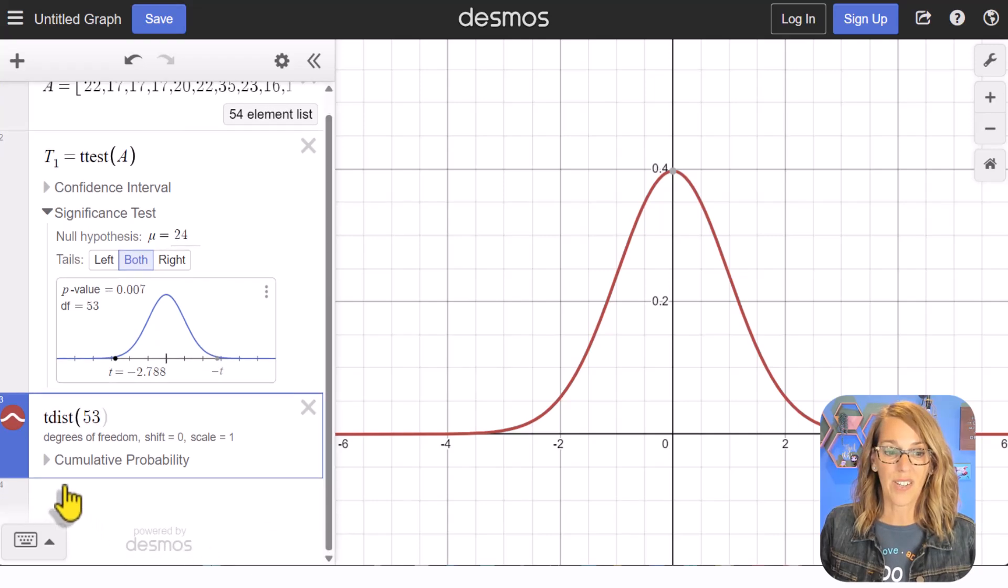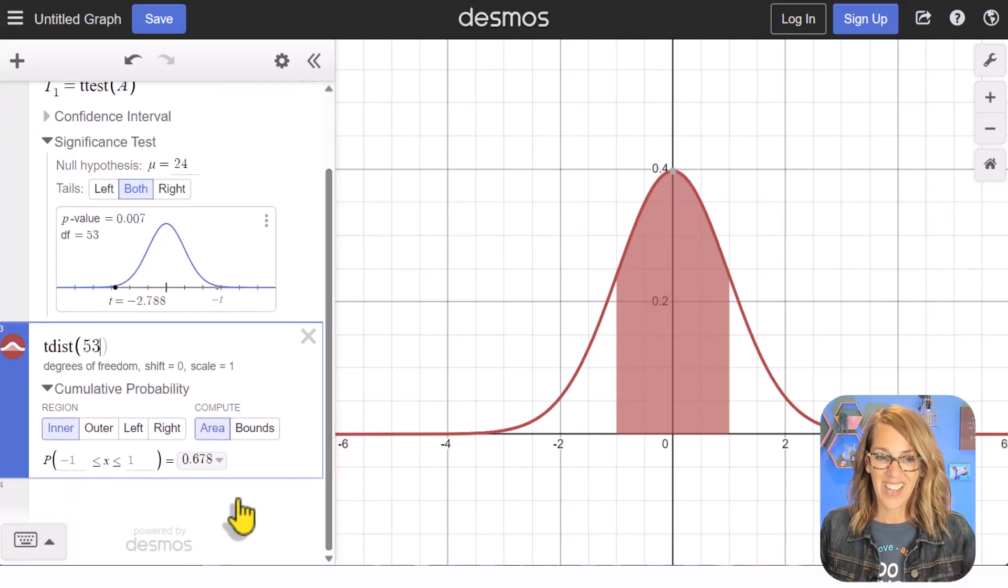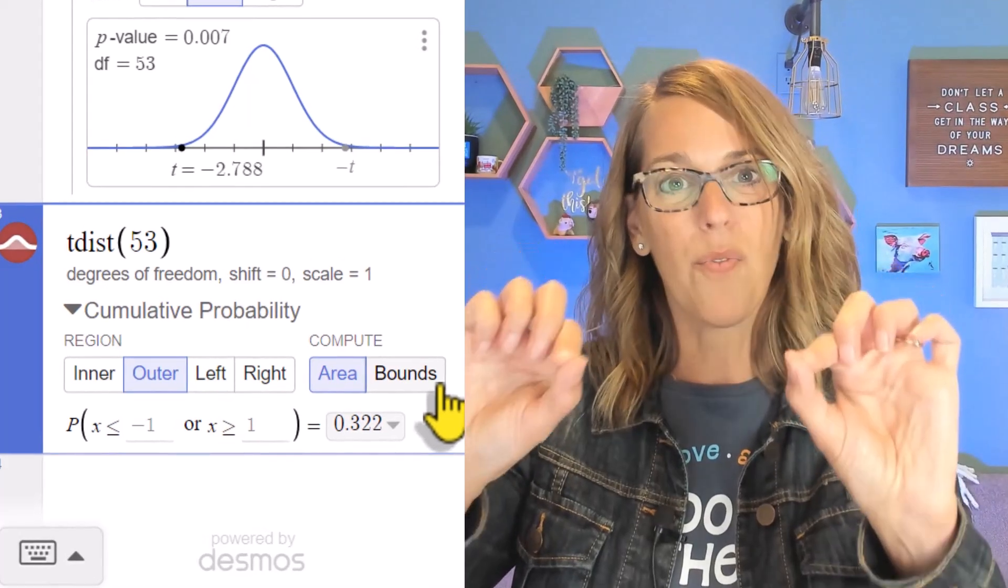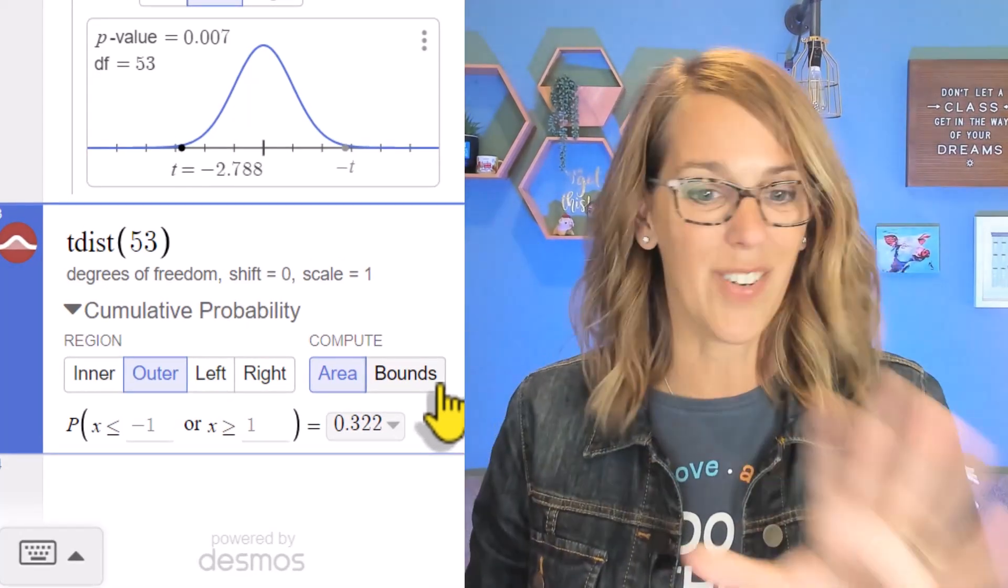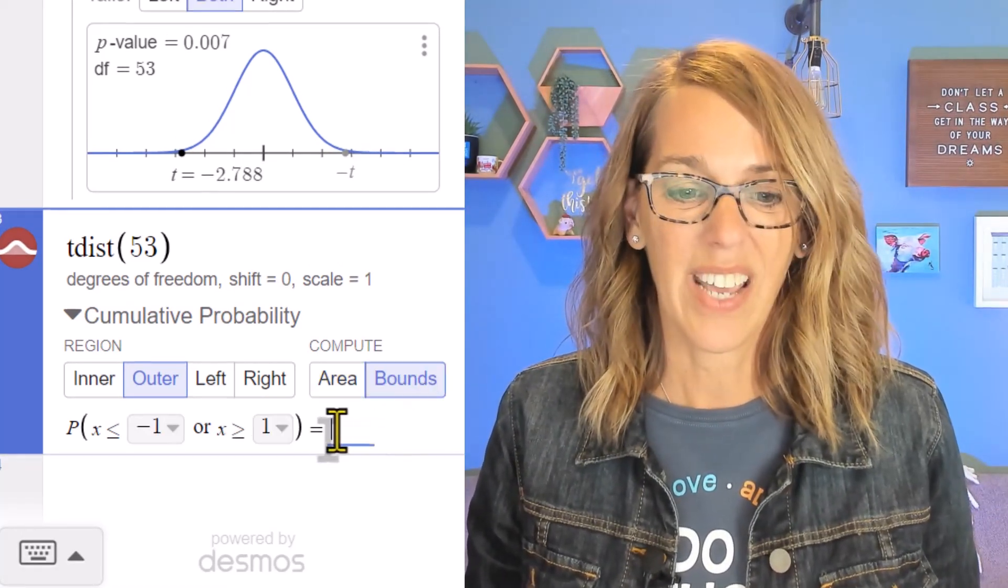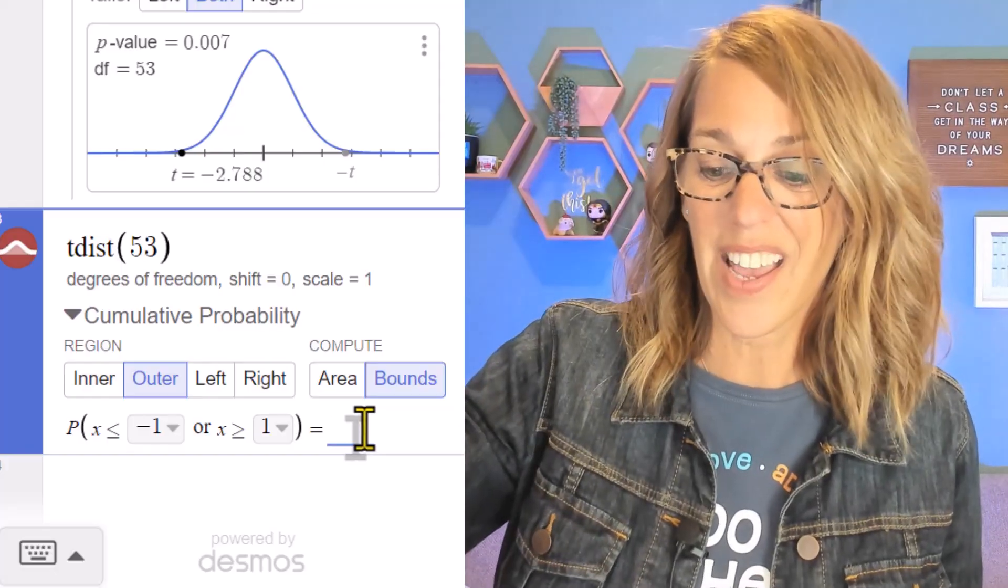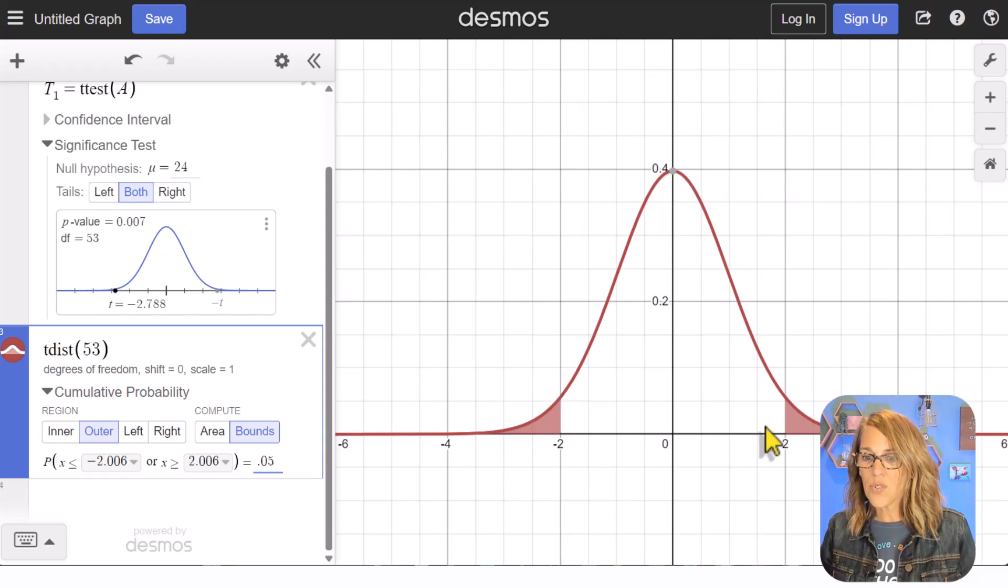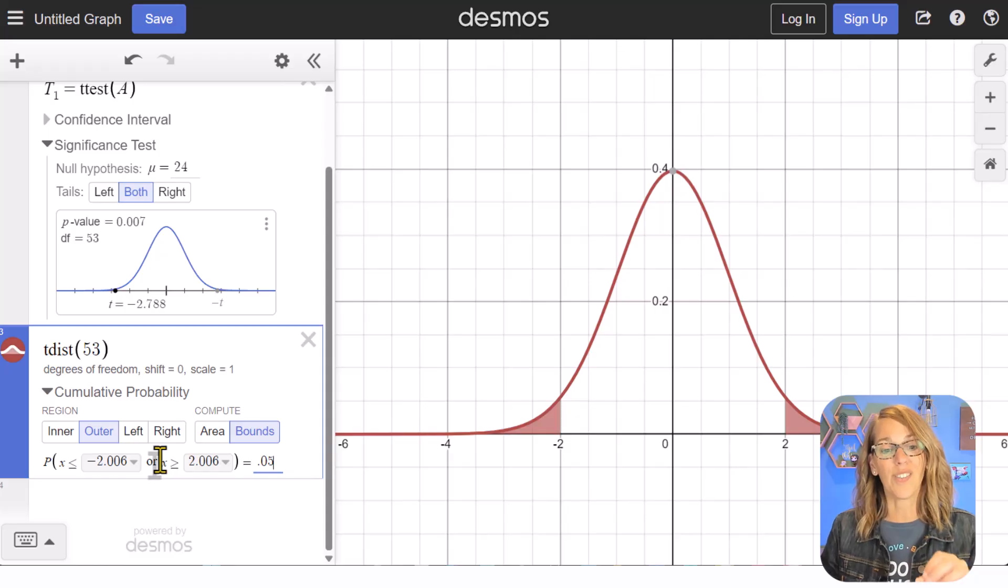Now we wanted to find those critical values. So I'm going to expand my cumulative probability, and then what do I want? I wanted those two outer tails to match the sketch that I've got on my work. To get the two outer tails I'm going to choose outer. It's looking better already and I want to compute the bounds for my rejection tails. I don't want to compute the area. So let's click on bounds and I'm going to change this area to be 0.05, which is my significance level. So I've got 0.05, I've got my two rejection regions here, and I can see that I've got critical values of plus and minus 2.006.